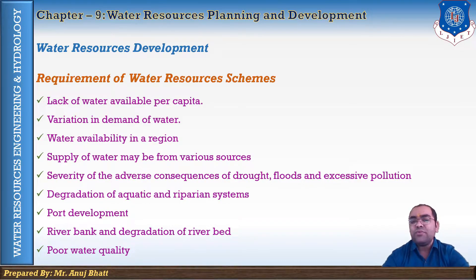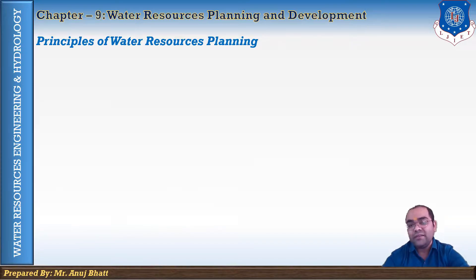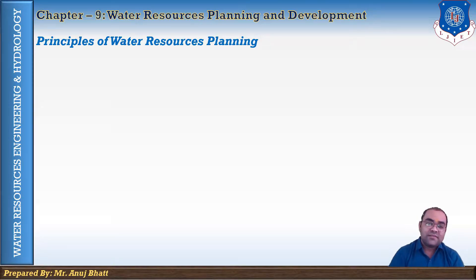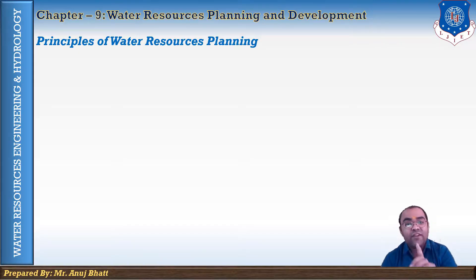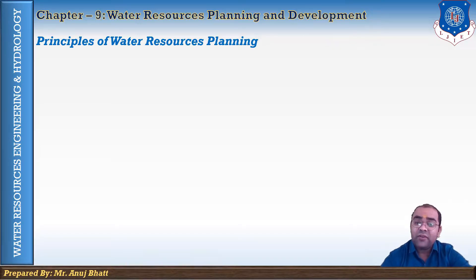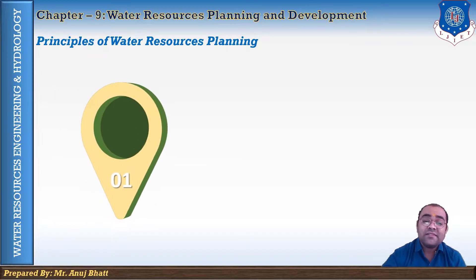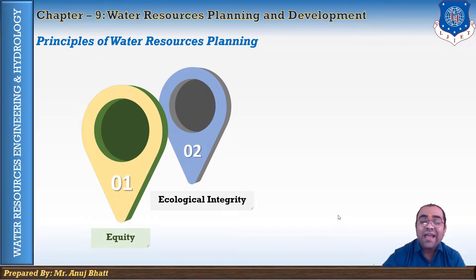Let's see the principles and objectives of water resource planning. These principles are based on a 3E system. For a country to shift its water management towards a more holistic and integrated system, it must review its water policies — something currently ongoing in many countries worldwide. A water policy often starts with the definition of basic principles such as sustainable development and socio-economic development. The three key policy principles, known as the 3E theory, are: Equity, Ecological Integrity, and Efficiency.